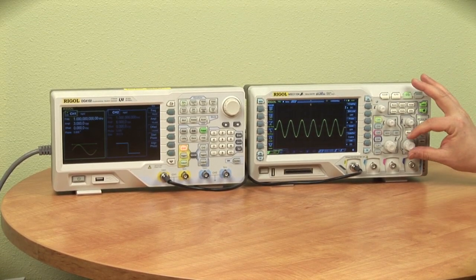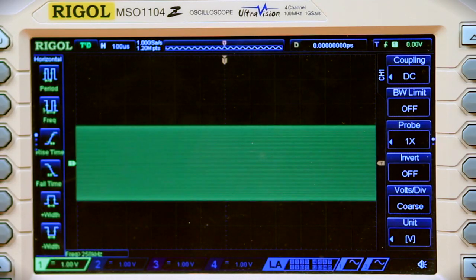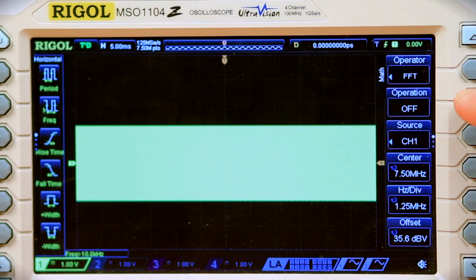Now to use our deep memory mode, the first thing we're going to do is move out the time scale on this scope. That will give us a lot more data to analyze when we do the FFT. Now let's turn the FFT on.